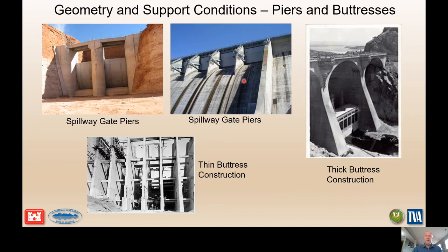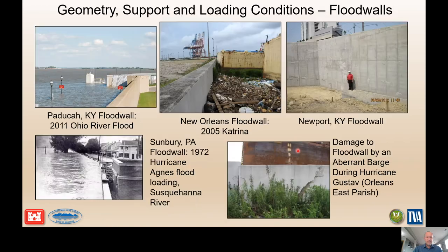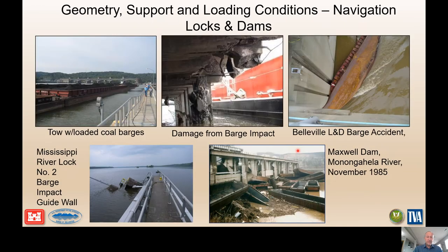This is Canyon Ferry Dam with very thin pier members for the gated structure, and this is Coolidge Dam with very thick buttresses. There's a lot of variation in the different sizes and types of structures. Same with flood walls — different types of loading, a lot of flood loading, barge impacts — just a lot of different configurations and geometries, including navigation locks and dams.